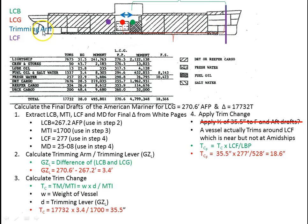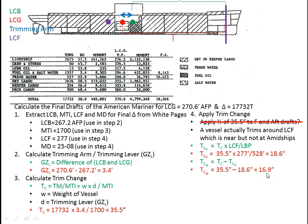Trim change aft equals total trim change minus trim change forward: 35.5 minus 18.6 equals 16.9 inches aft. The bow gets a larger share because it has the longer distance from the LCF. The longer distance gets slightly more than half the trim change, and the shorter distance gets slightly less.